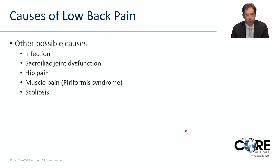Other common causes of back pain include sacroiliac joint dysfunction — the sacroiliac joint is in the buttock region, centered between the hips and the lumbar spine. Hip pain can mimic back and radicular leg pain. Muscle syndromes such as piriformis syndrome, where a muscle in the gluteal region becomes inflamed, can cause pain. Scoliosis or curvature of the spine can also cause pain.